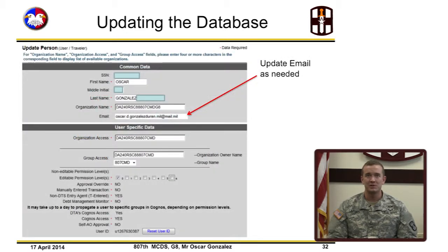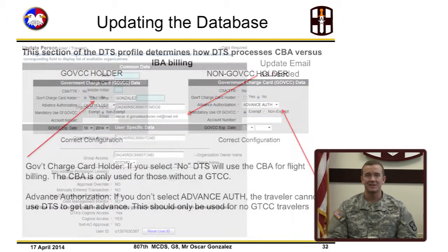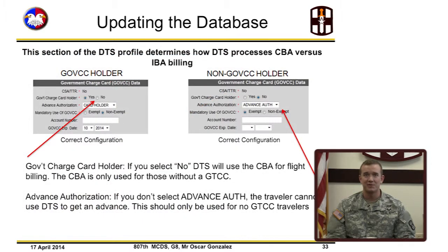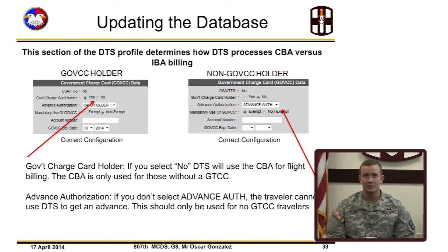Below organization name is where you will update the email field. This section of the DTS profile determines how DTS processes centrally billed versus individually billed accounts when creating a DTS authorization. On the left is the setup for a travel cardholder — if you select no, DTS will use the centrally billed account for flight billing. The centrally billed account is only used for those without a travel card. On the right is a non-travel cardholder — if you don't select advanced authorized, the traveler cannot use DTS to get an advance. This should only be used for non-travel card holders.